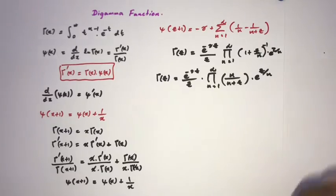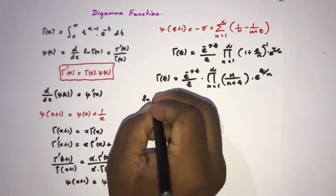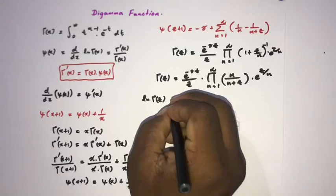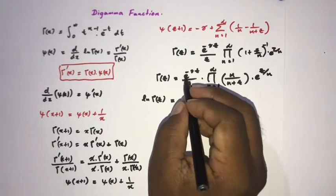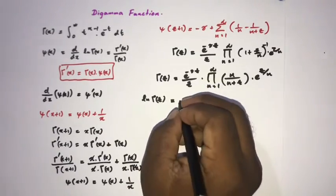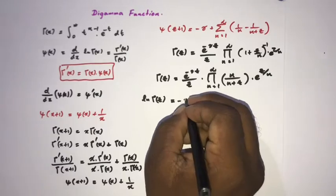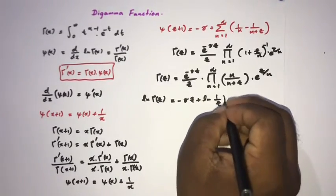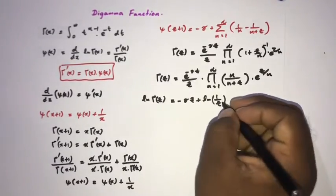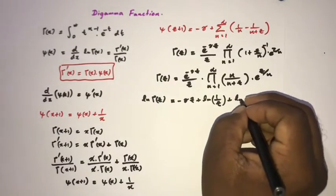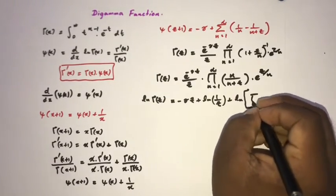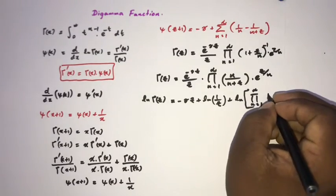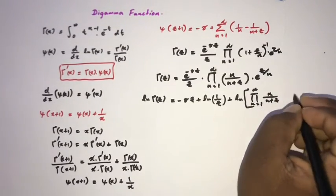Taking the natural log of both sides: ln Γ(c) = −γc + ln(1/c) + sum from n=1 to infinity of ln(n/(n+c)) + c/n.